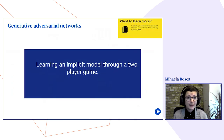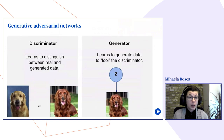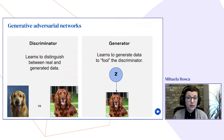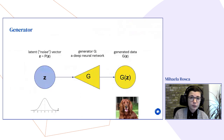GANs learn to generate data through an implicit model via a two-player game. The players are: a discriminator that learns to distinguish between real data from our dataset and generated data from our model; and a generator that learns to generate data that fools the discriminator into thinking it's real — producing such good quality data that the discriminator can't tell the difference.